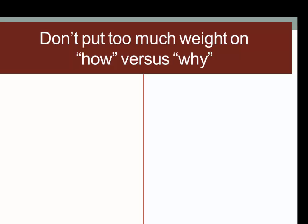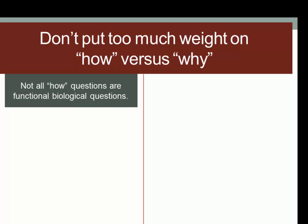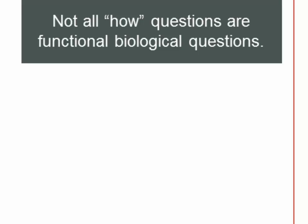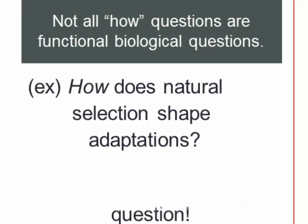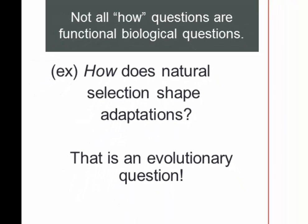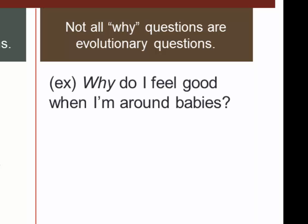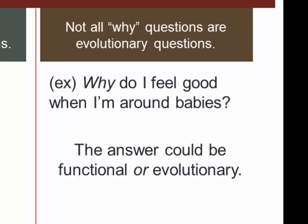You can get too hung up on the distinction between 'how' questions and 'why' questions — it's not always clear that this maps cleanly onto the distinction between functional and evolutionary biology. Not all 'how' questions are functional biological questions; for example, 'how does natural selection shape adaptations?' is very much an evolutionary question. Similarly, not all 'why' questions are evolutionary — 'why do I feel good when I'm around babies?' could be answered using either functional or evolutionary biology.